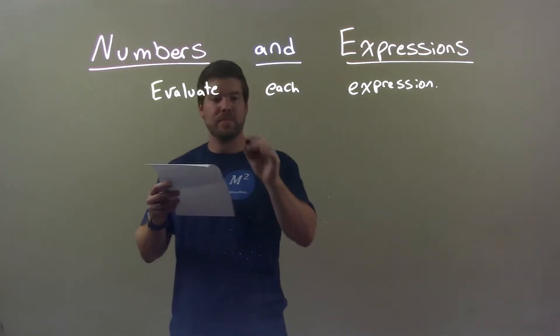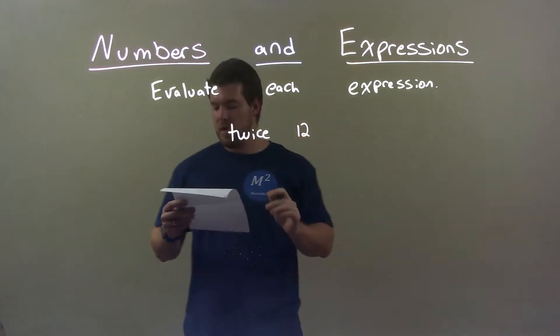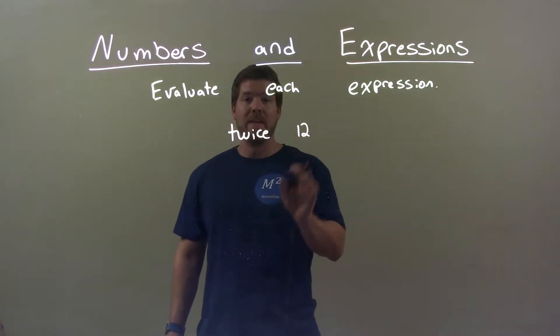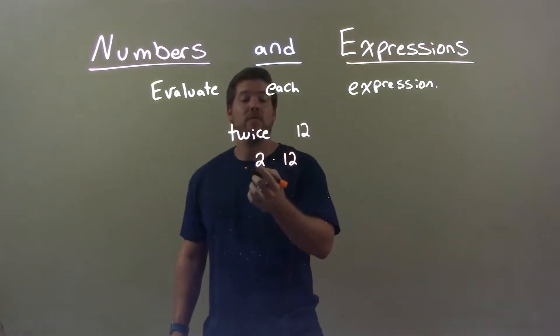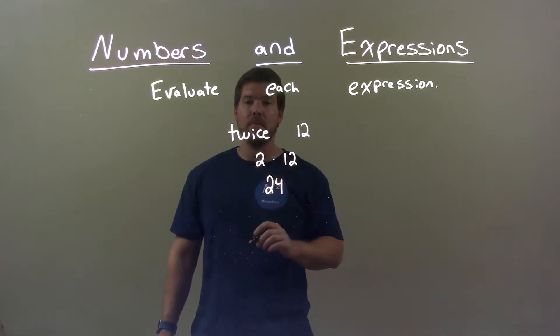So if I was given this, twice 12. I have twice 12. Well, when I have twice something, that's going to be 2 times that. So we have 2 times 12. Now we have to evaluate 2 times 12. Well, 2 times 12 is just 24. So we have 24 right there. And that's it. Our final answer is just 24.